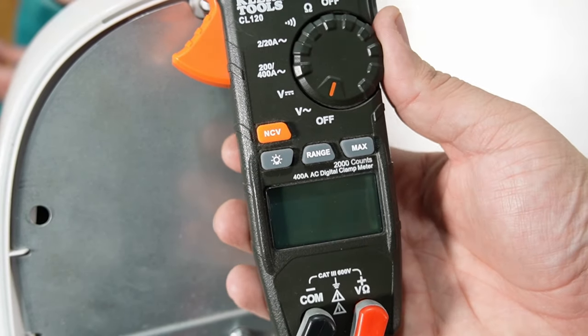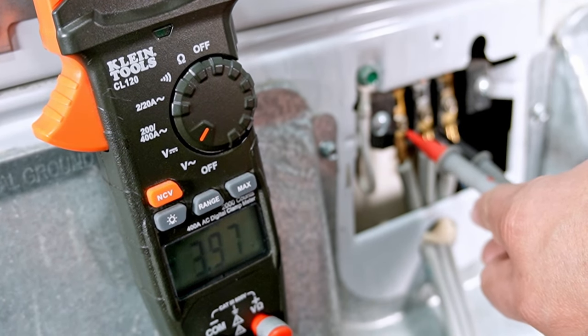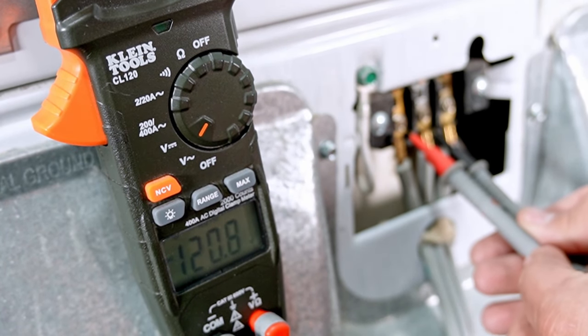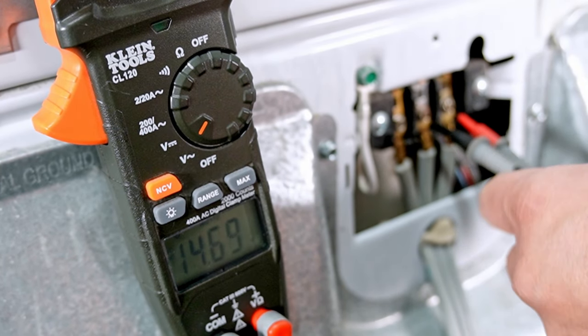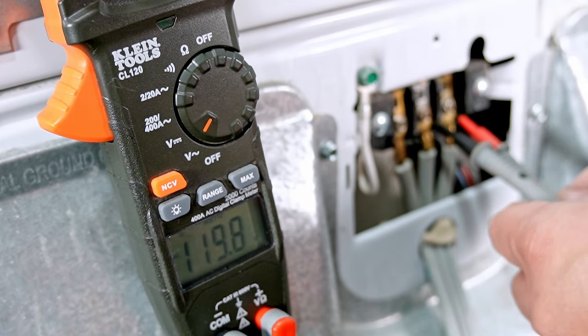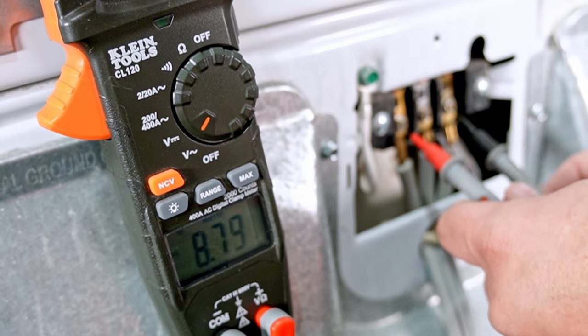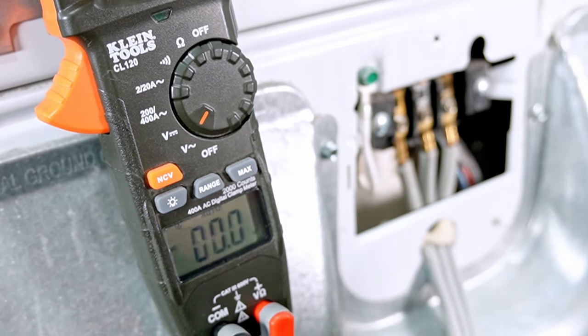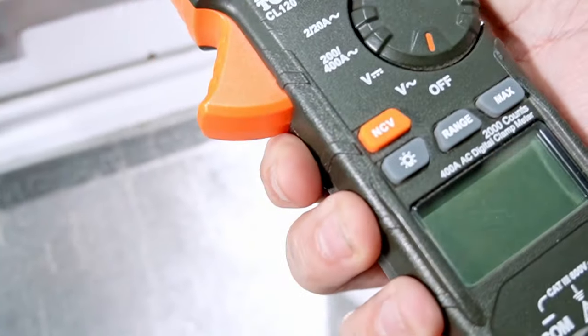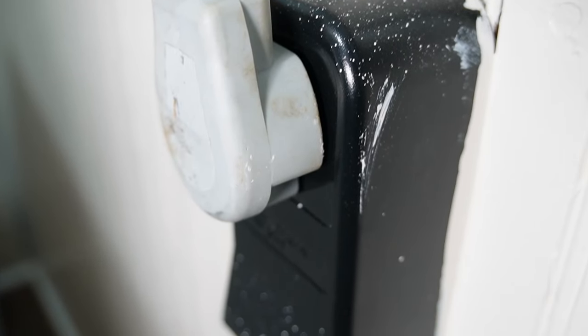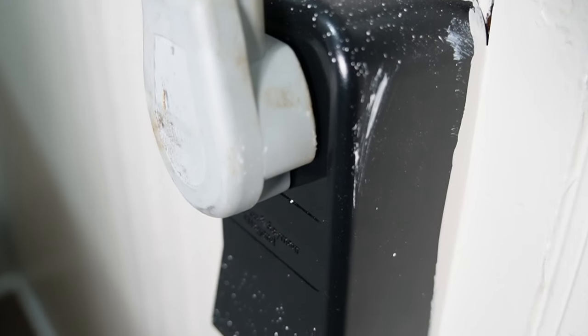If you have a multimeter, set it to AC voltage and use the leads on the meter to test the middle and left terminals. Then test the middle and right terminals. Both should register about 120 volts on each side. Then you want to test the left and right terminals together. You should get a total between 208 volts and 240 volts depending on your electricity. If you get an odd number below 208, it's likely that your breaker, power cord, or outlet are having a problem and you need to diagnose and fix that.